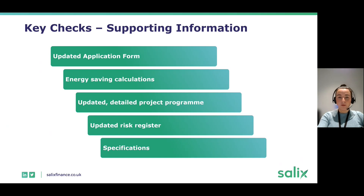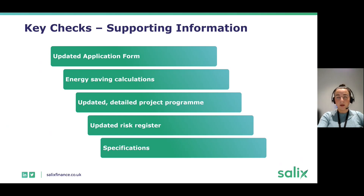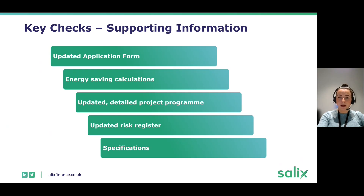An updated detailed project programme and risk register are important for us to understand what stage the project is at and any additional risks these measures might introduce. It's also important that we have reassurance you're still planning to complete the project by March 2023. Any product specifications you have will be useful — providing them early means one less thing to do at the completions stage and gives us confidence in the project design.